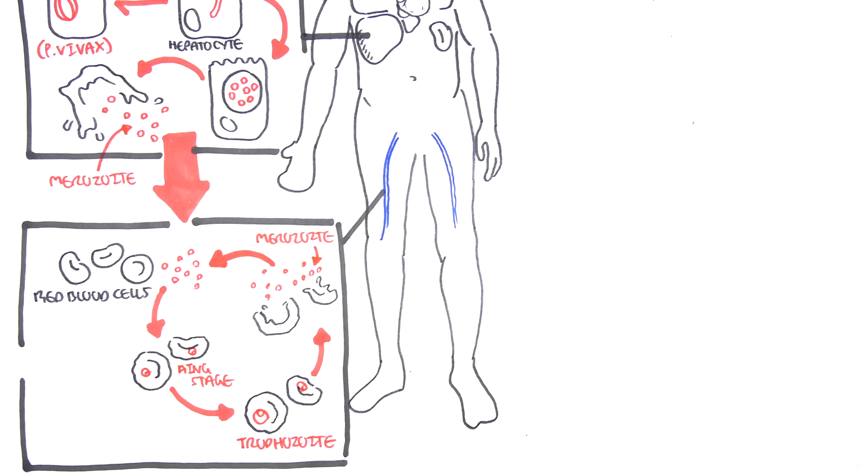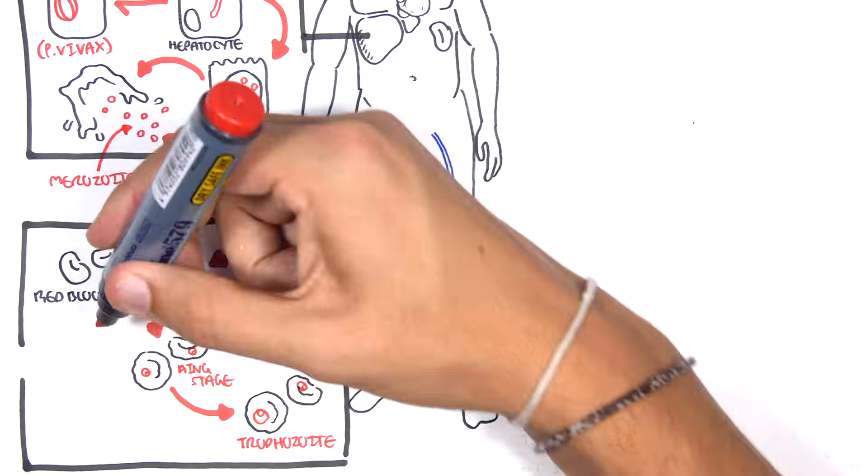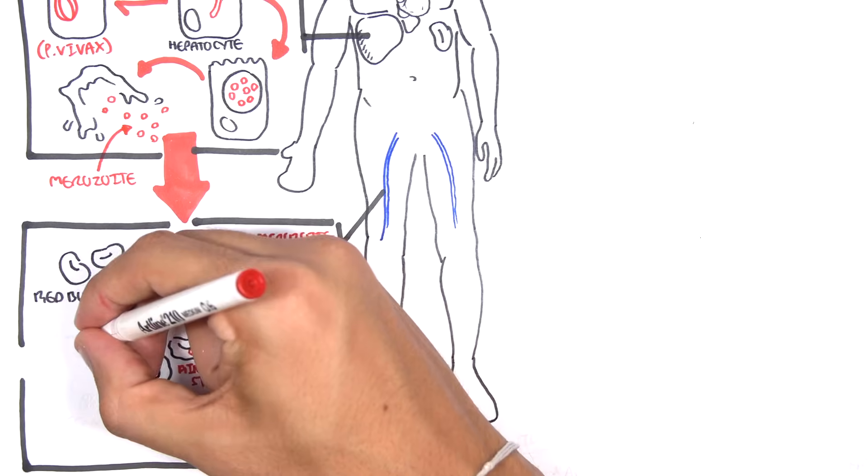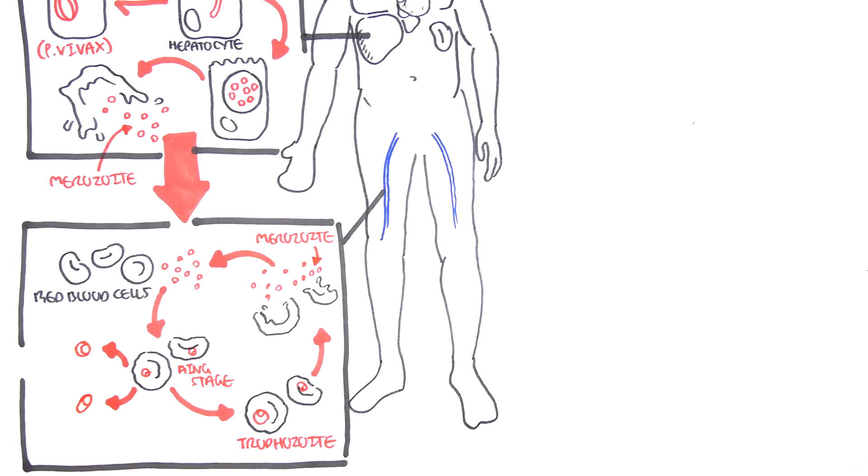This cycle of the parasite is the asexual blood cycle and is responsible for the clinical manifestations of the disease which is fever, chills, and sweating. Anyways, from the ring stage, some parasites will differentiate into sexual stages. So some of these parasites will become gametocytes, either male gametocytes or female gametocytes.